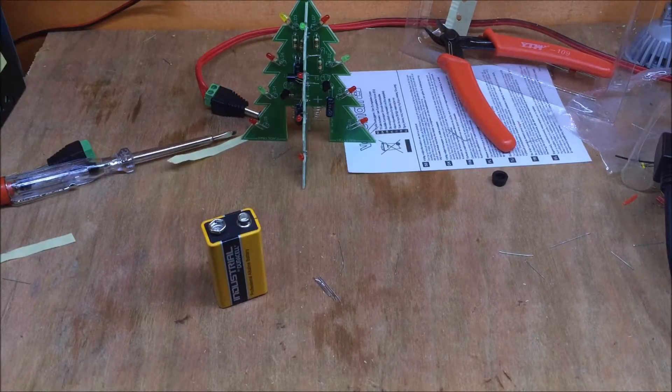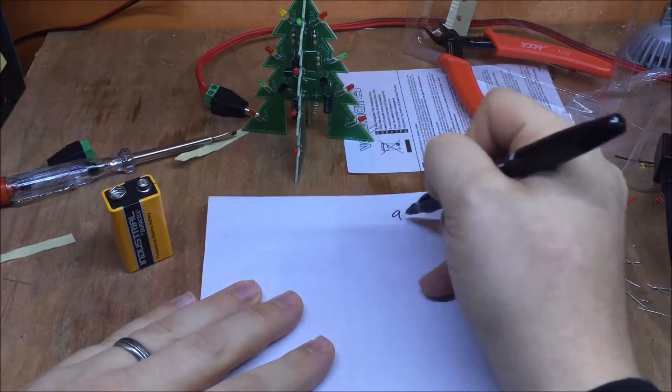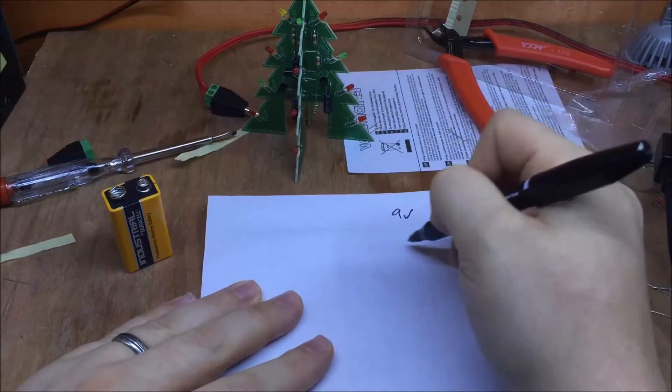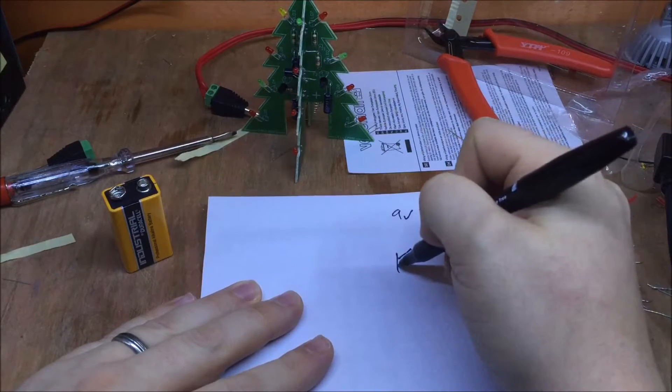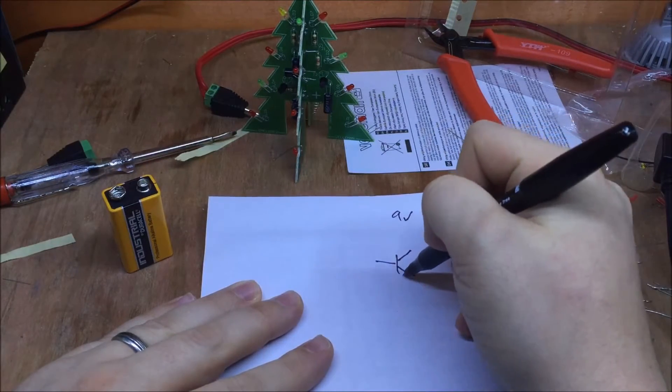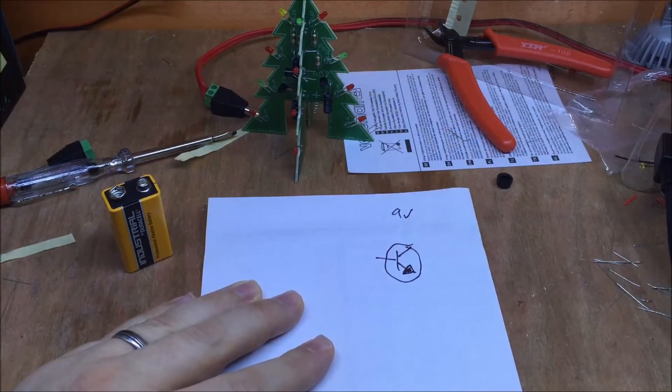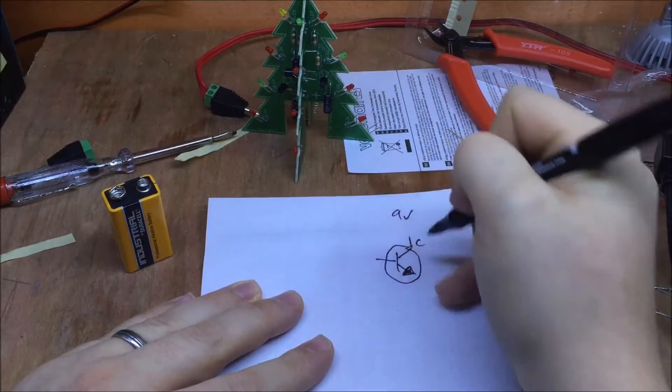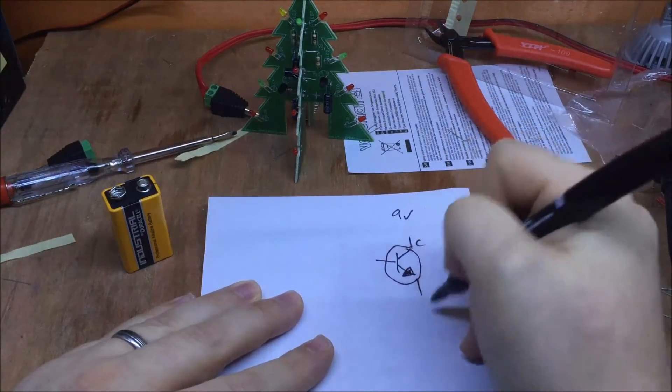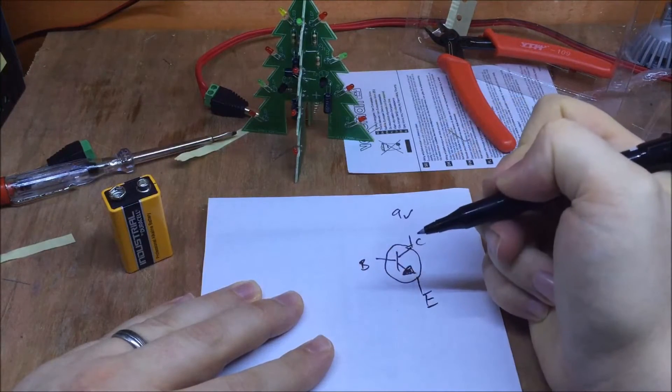Bear with me while I get a piece of paper. Okay, so to explain a little bit further, if I've got 9 volts up here, and my transistor, NPN transistor, here. Sorry about the rough drawing. We'll have collector, emitter, and base over here.